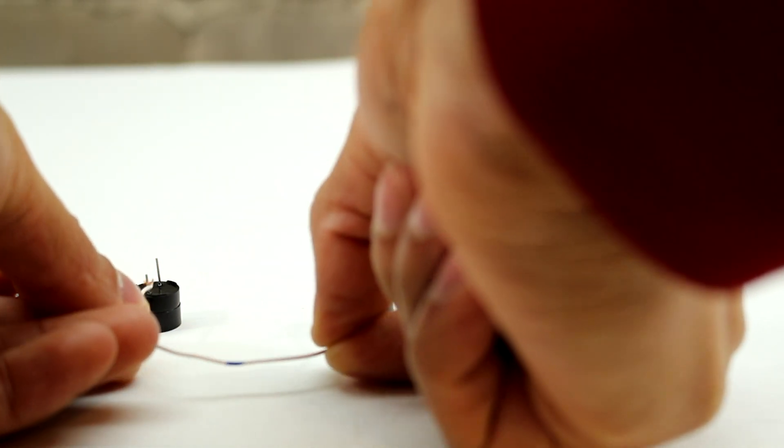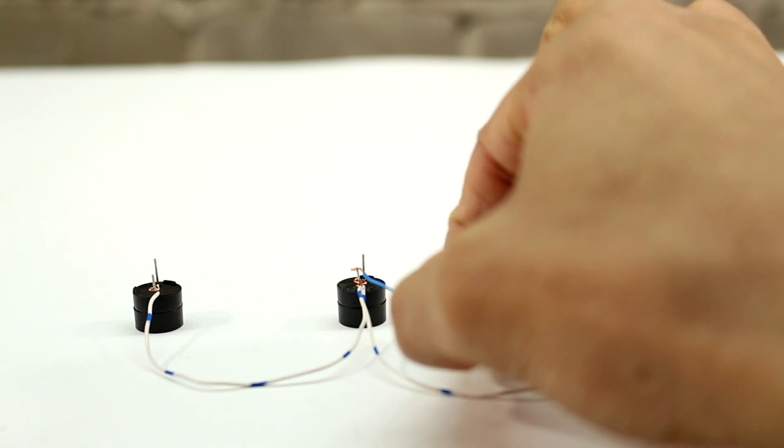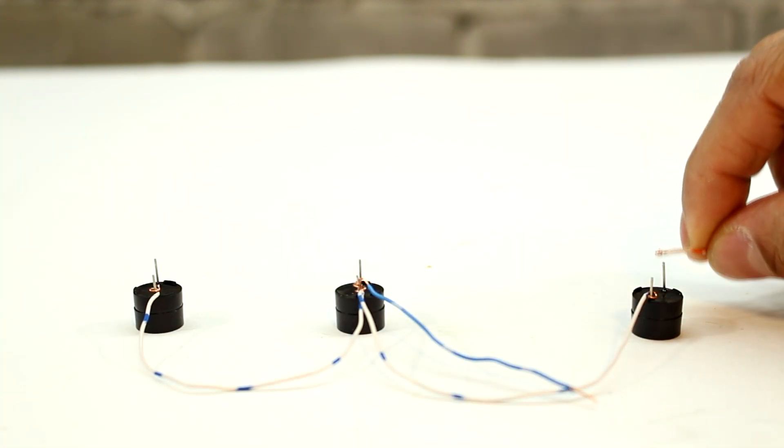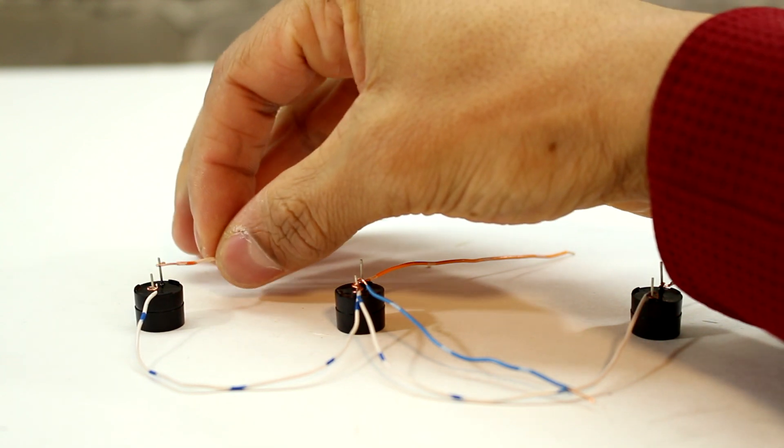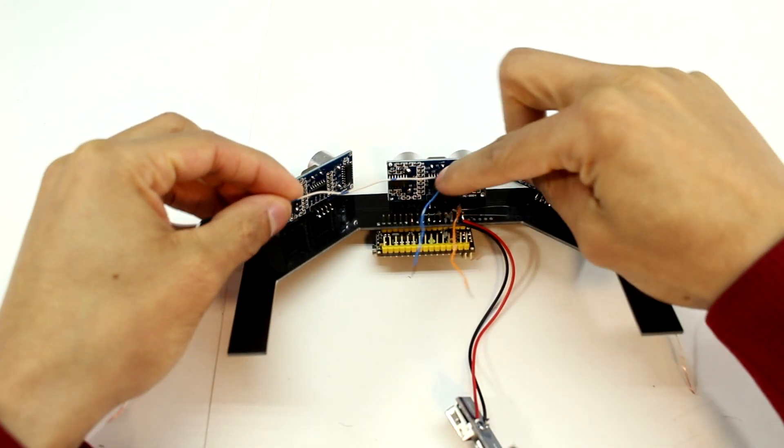Now we can set up the buzzer. They can all share the same ground so we can hook all those up to the same wires, and for the 5 volt pin we'll hook each of those up to different wires. Now we can attach all of this into place and glue all the parts down.